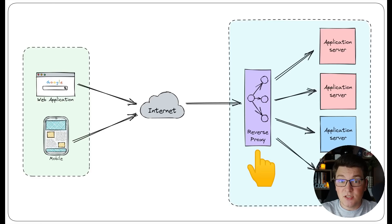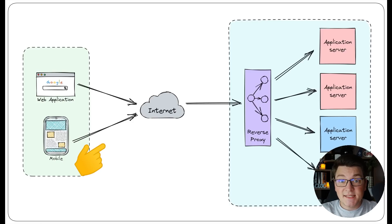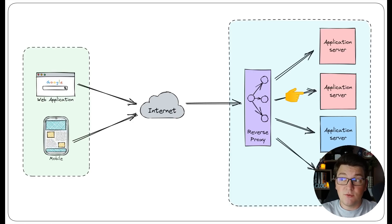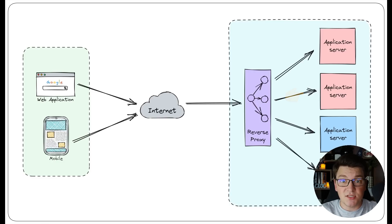A reverse proxy is just a server that sits in front of your application servers and it's the only one that's accessible from the outside. When a client sends an HTTP request to your API it's first going to hit the reverse proxy server which then proxies the request to the respective application server. The client isn't aware that the application server even exists because it's only talking to the reverse proxy.